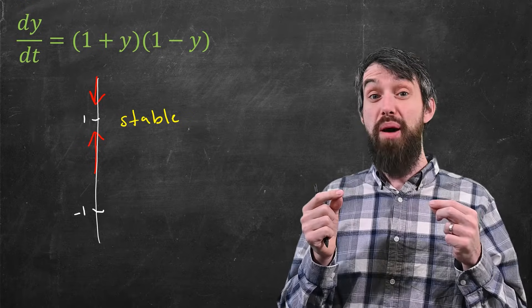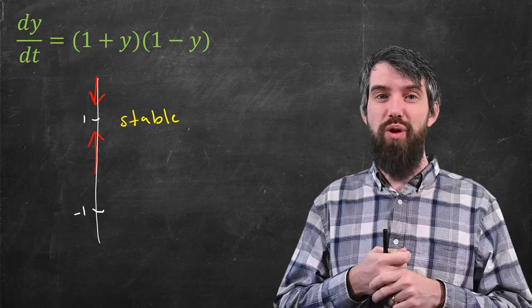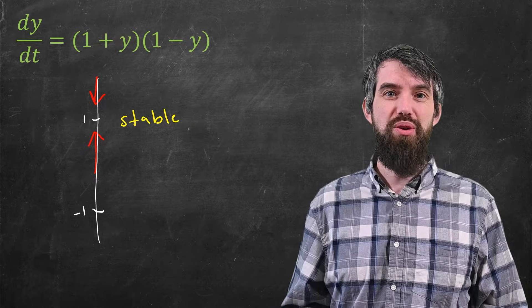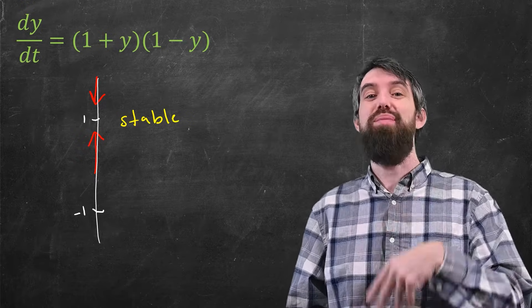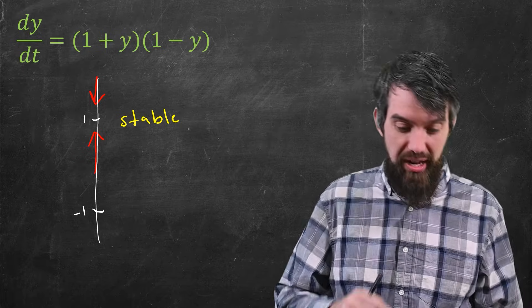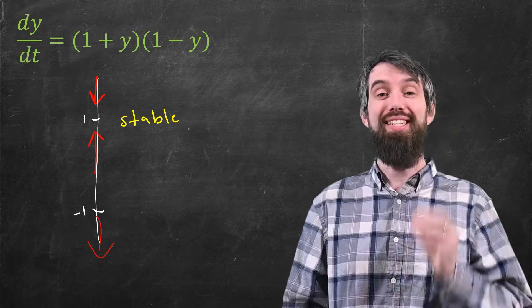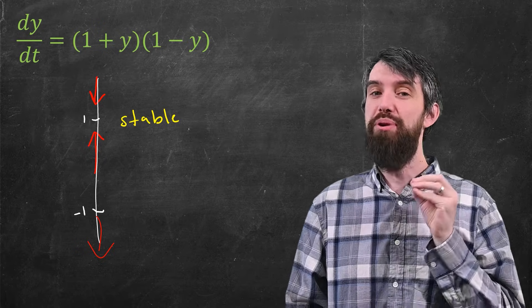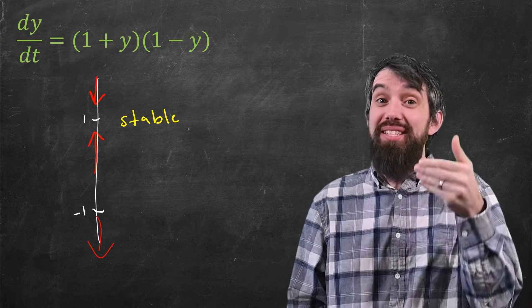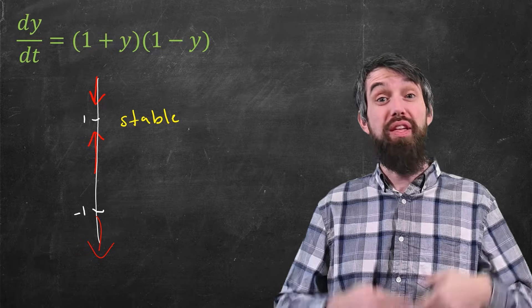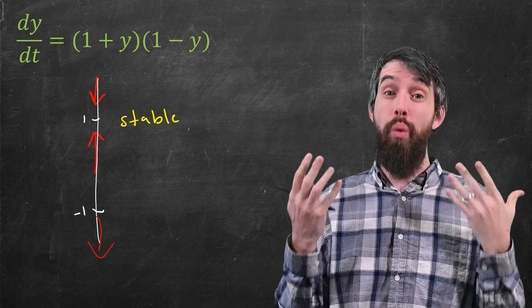Finally, if you plugged in a number which was less than -1, so a number like -2, then what you get is something negative times something positive, something negative overall, the derivative is negative. And so again, it's an arrow which is going to be pointing downwards, and that's why y equal to -1 is an unstable equilibrium point, because a solution that starts near there is going to tend away.